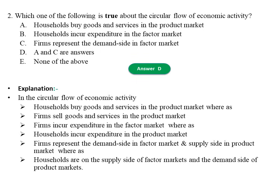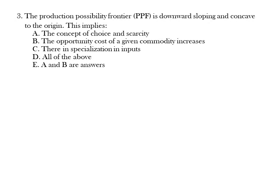Question three: The production possibility frontier is downward sloping and concave to the origin. This implies: A) The concept of choice and scarcity, B) The opportunity cost of a given commodity increases, C) There is specialization in inputs, D) All of the above, E) A and B are the answer. The answer should be B, the opportunity cost of a given commodity increases.